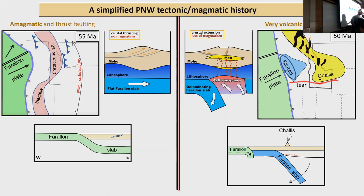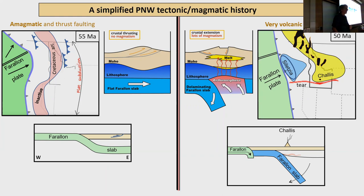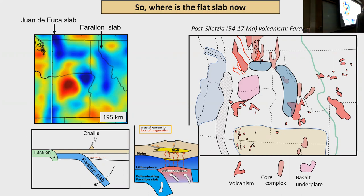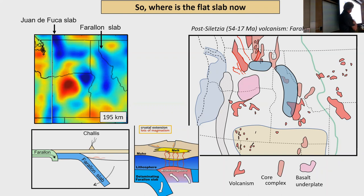When Siletzia accretes, new subduction begins at Cascadia, but the old slab has to come off — I show it delaminating to let the Challis event happen. There's seismic evidence for the parallel slab coming off; we image it in the mantle going down to about 400 kilometers in a very slab-like structure. A map of all the volcanism in the literature — Pasco Basin, Okanagan, and surrounding areas — marks where the slab must have come off to let that volcanism happen.